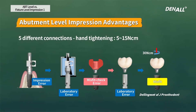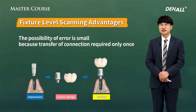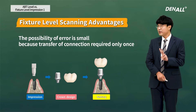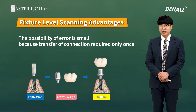I'll talk more about fixture-level impression in the next lecture, but if hex and lab errors can be removed, there will be no problem. However, given that the connection needs to be transferred multiple times, there could be errors, increasing the chance for inaccuracy. More recently, as digital scanning has been adopted, transfer of the connection is now only required twice, so even with fixture-level impressions, the possibility of error has been reduced.